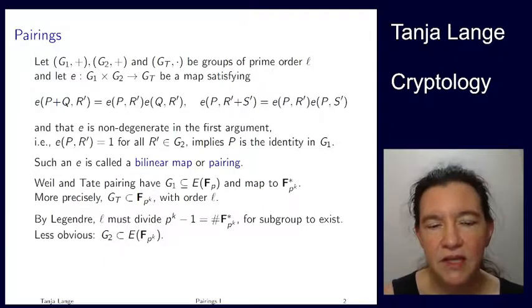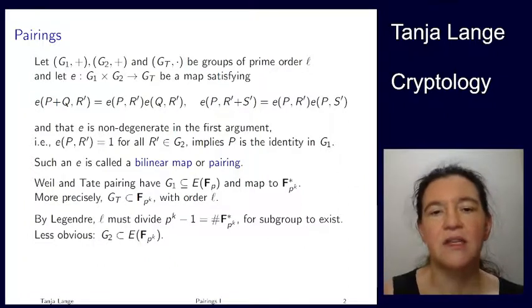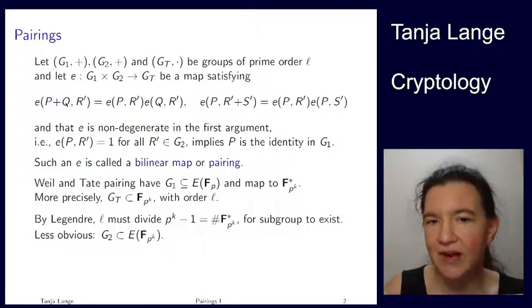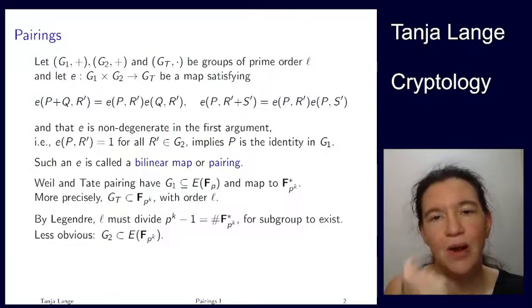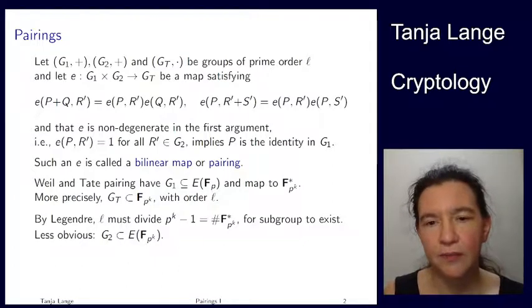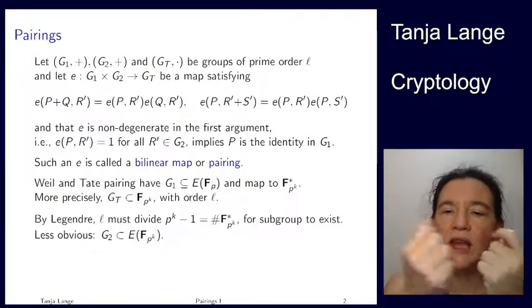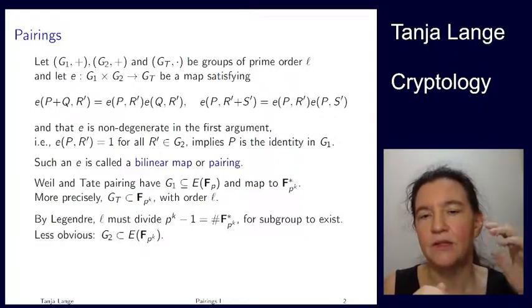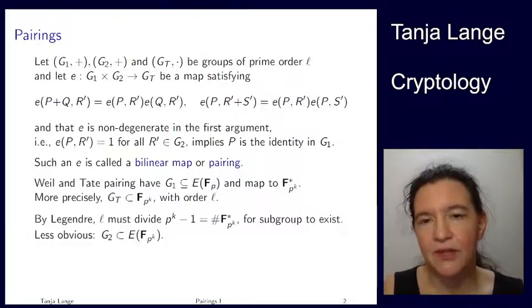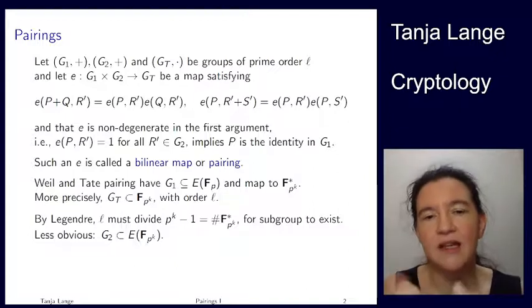Now in the maps that we're going to see, and I'm using those as a black box, so you can look up the Weil and the Tate pairing. All of those start from the point group of an elliptic curve. Now I want to have a subgroup of order L. So G1 is a subgroup of the points over Fp. And then they're mapped to the same field, except there's an extension. So it's Fp star, Fp to the k star. So it's the multiplicative group of Fp to the k.